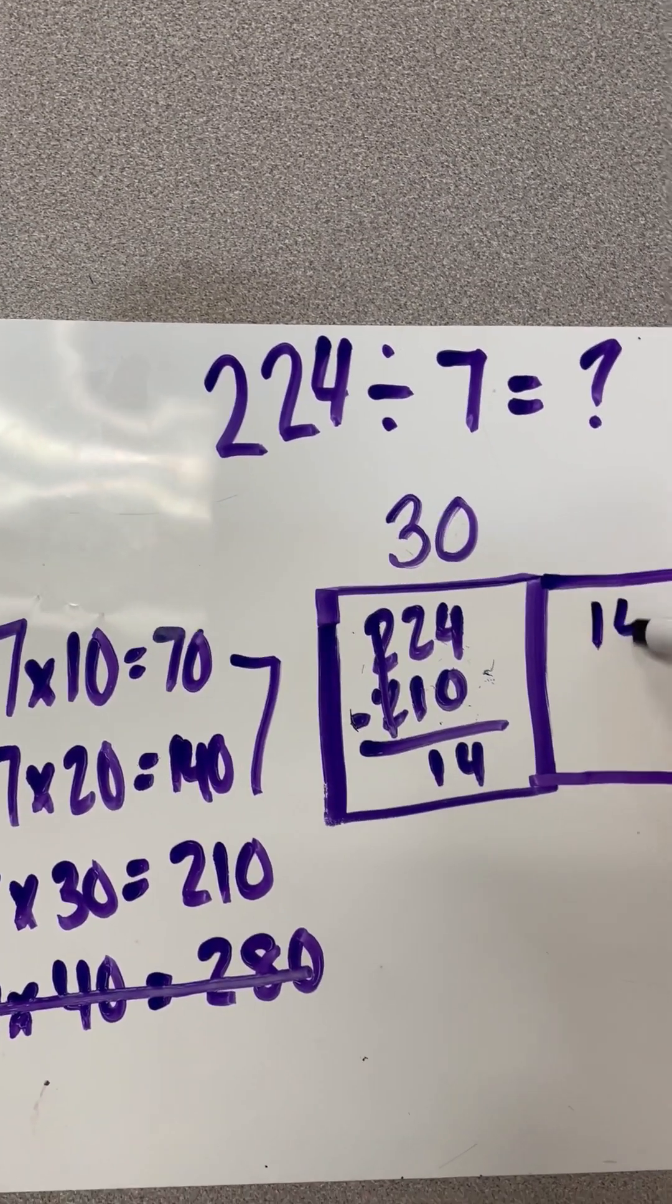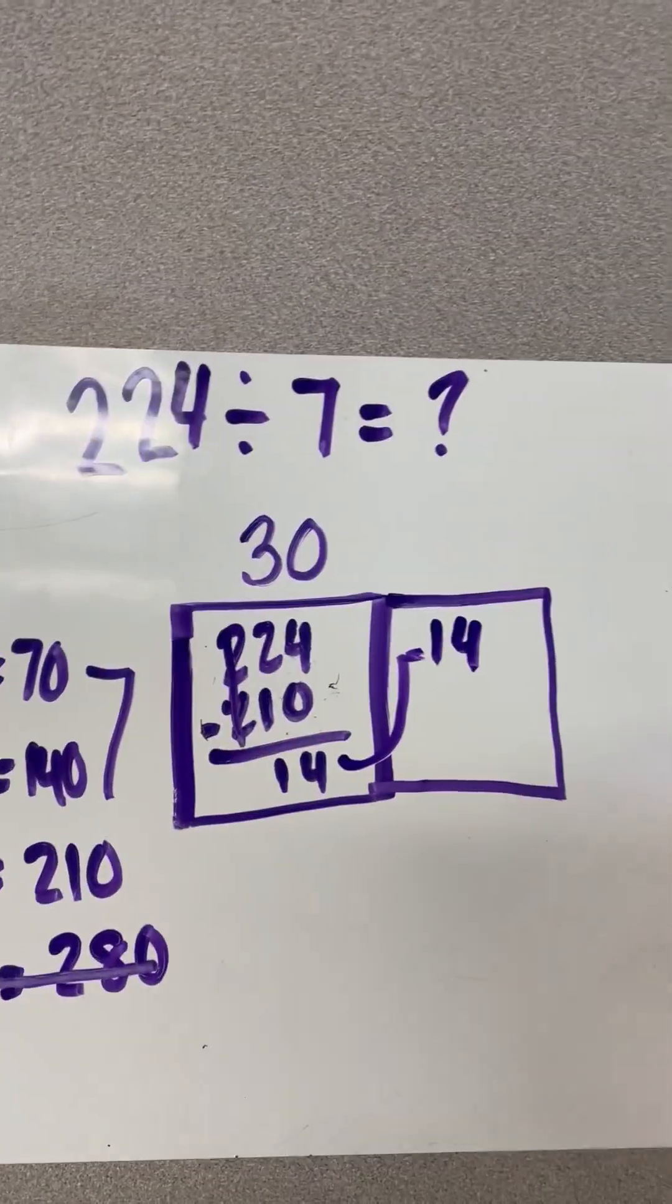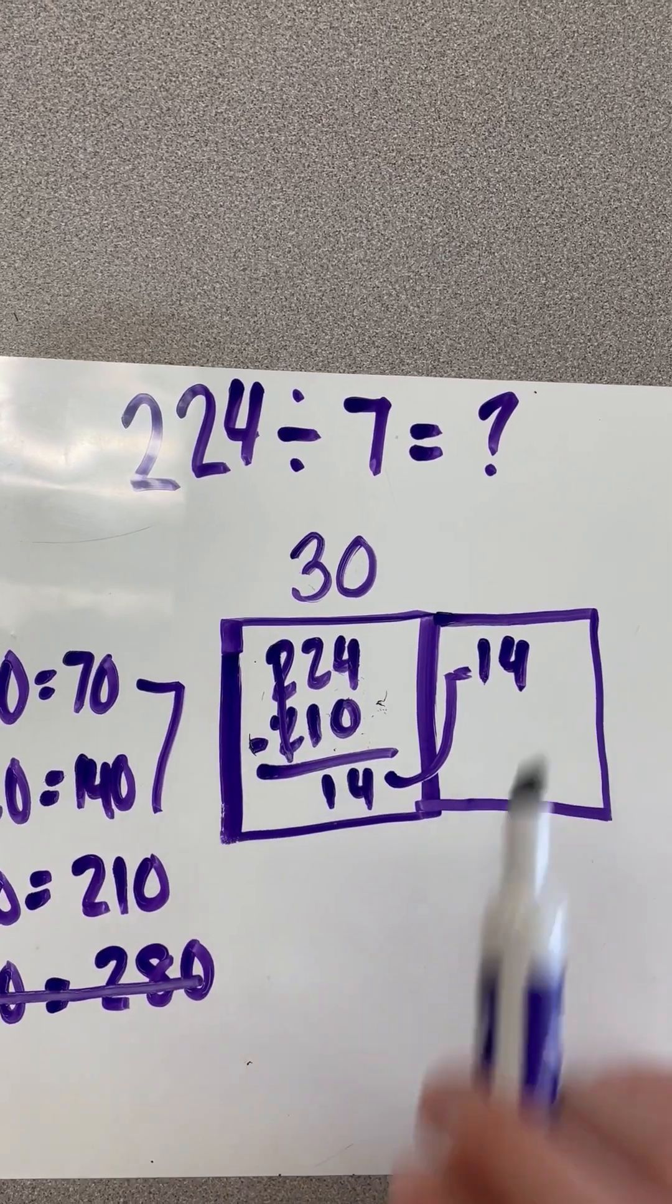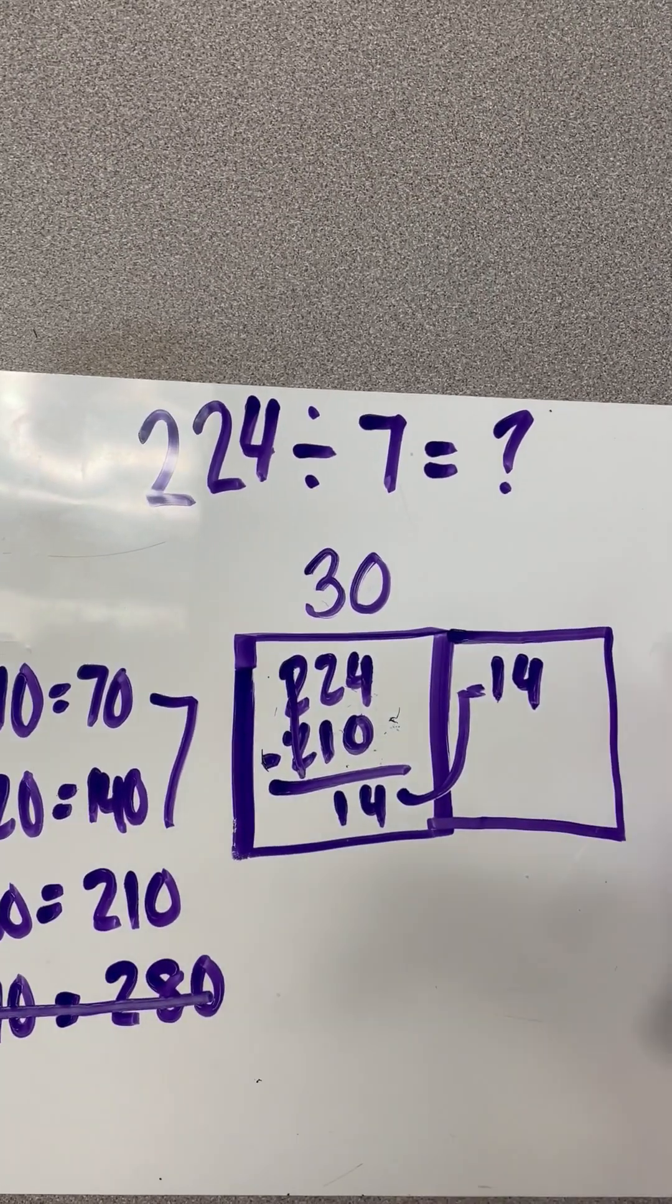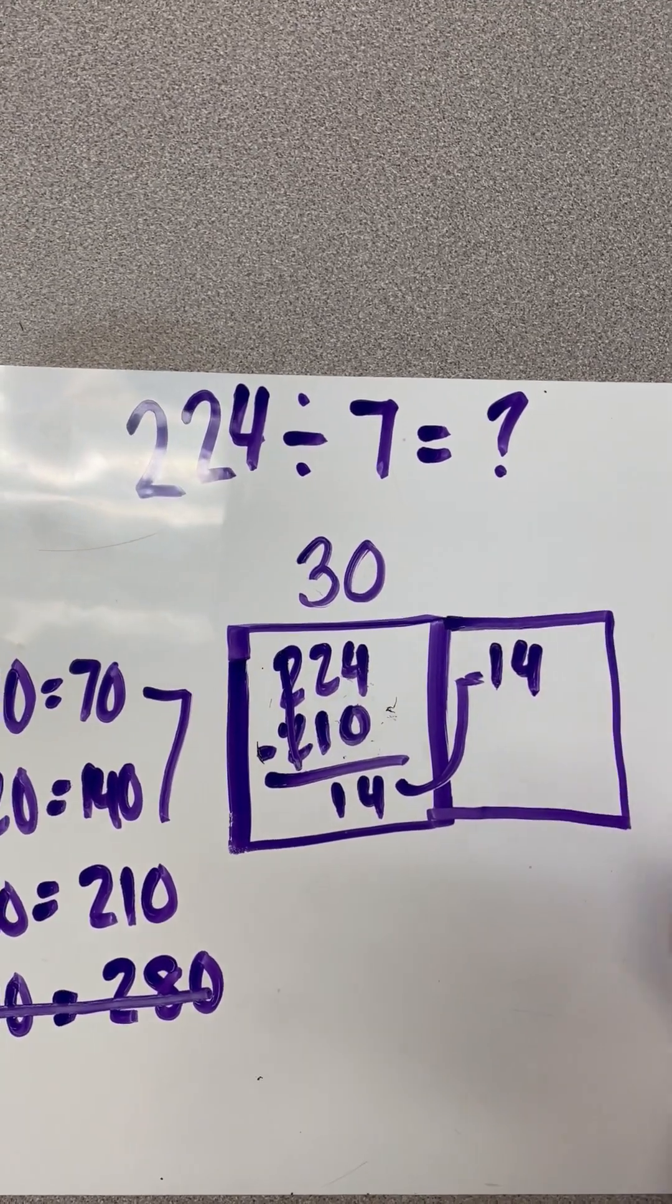So I am going to move it over to the next box. It's going to go up and over. So then I have to ask myself, how many times can 7 go into 14? Or what can I multiply by 7 to get 14?